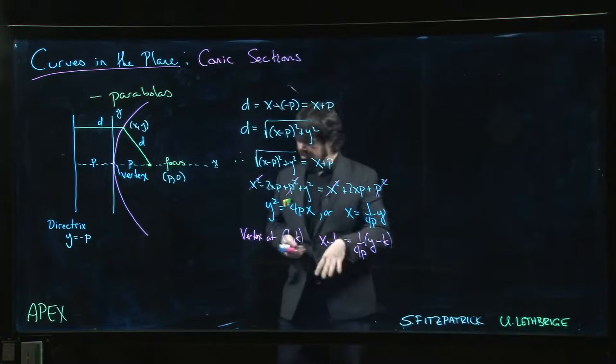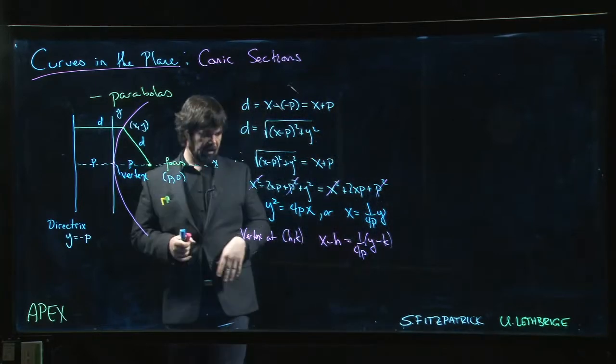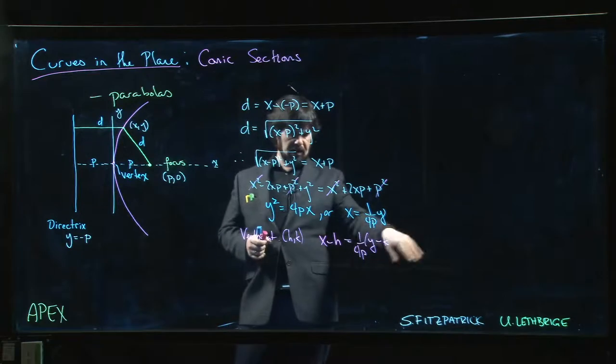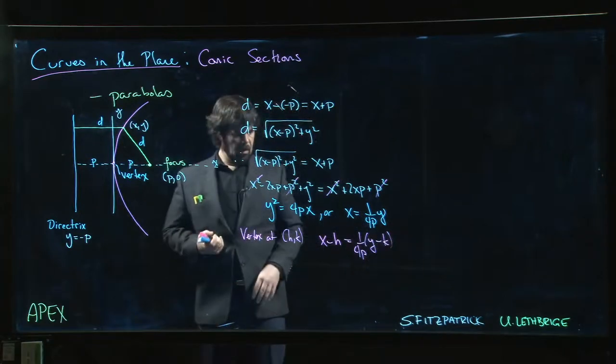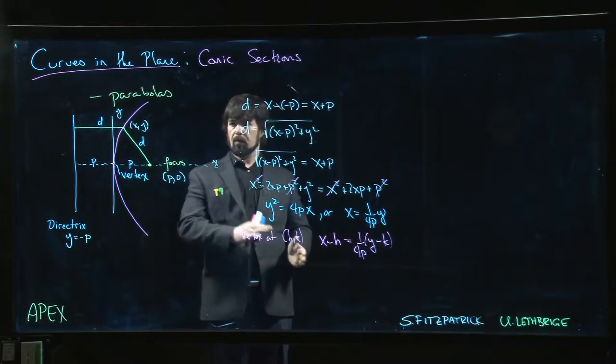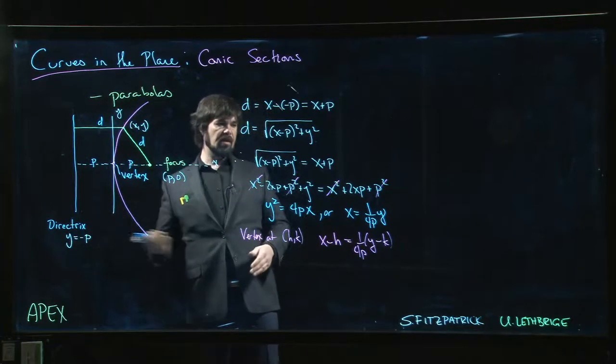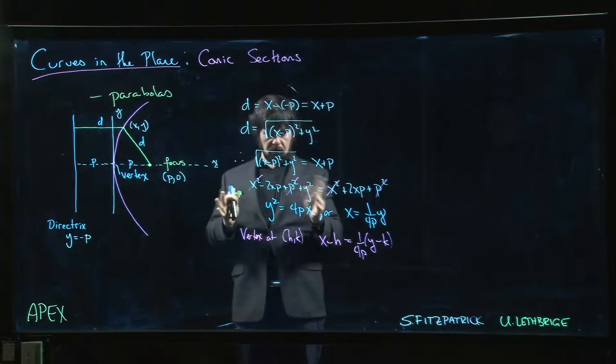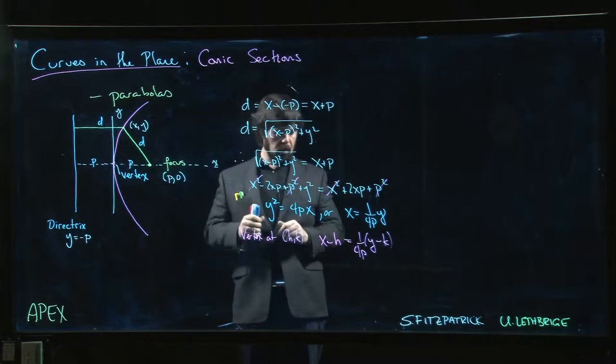And you could rearrange it if we needed to rearrange it. x is equal to 1 over 4p times y minus k squared, add the h to the other side. So this is what you get if you're opening to the right. If you were opening to the left, then you do have to account for sign factors that you have to fit in.